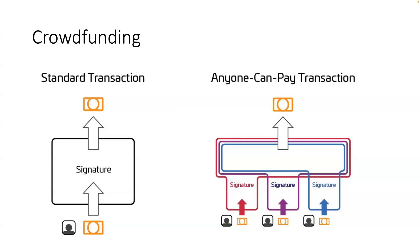Let me summarize: Alice signs with one input and one output as a partial transaction, gives it to Bob, Bob adds his inputs — now it has two inputs and one output. If Alice hadn't used ANYONE_CAN_PAY, the signature would become invalid because the message changed. That's why she has to use ANYONE_CAN_PAY — so anyone else can add inputs without invalidating her signature. I contribute 10 bitcoin and anyone else can pay the rest.